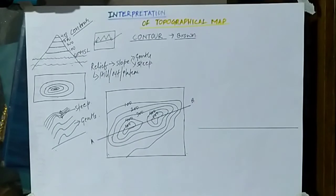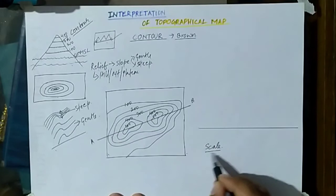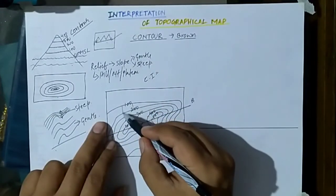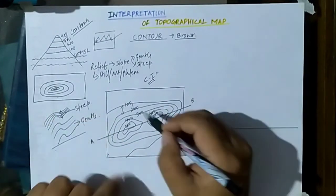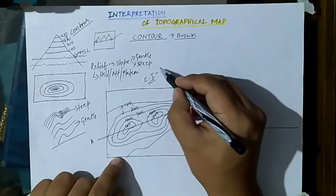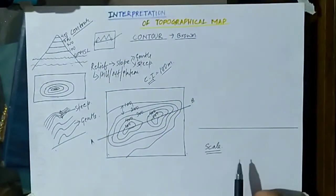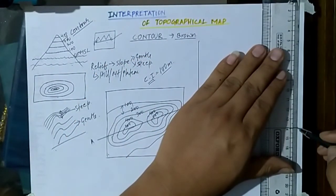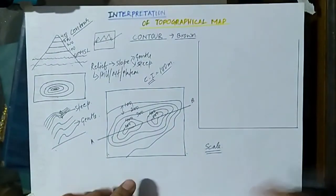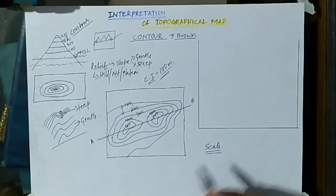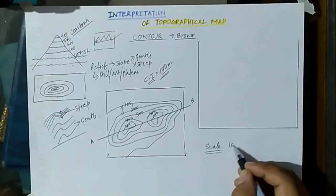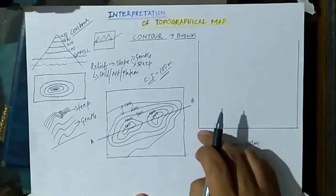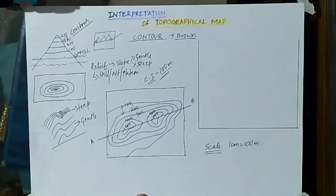One important thing is to take a scale. The contour interval — the distance between two contour lines — is 100 meters. This 100 meters has to be represented graphically. We take a scale where 1 centimeter equals 100 meters. So 1 centimeter on this graphical scale represents 100 meters on the ground.